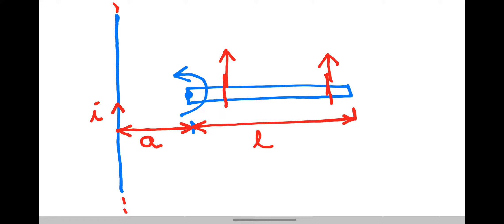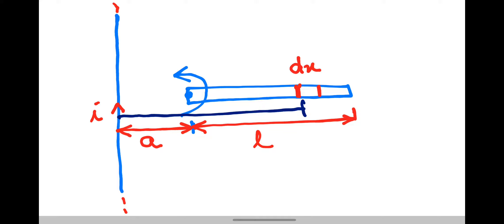So two things are different. The velocity being different was already considered in our derivation of Bω L²/2, but there B was constant. Here B is also variable. To tackle this, what we'll do is take a small strip of width dx at a distance x from the wire. We'll write dE = Blv.